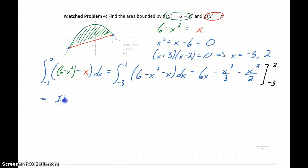This gives us (12 - 8/3 - 4/2) - (-18 + 27/3 - 9/2), which all simplified gives us 125/6.